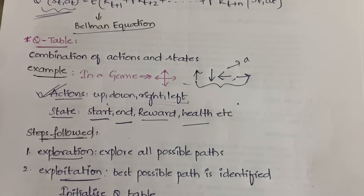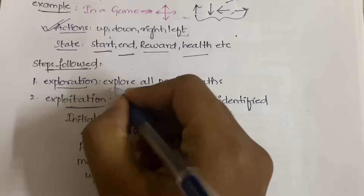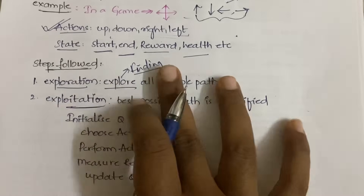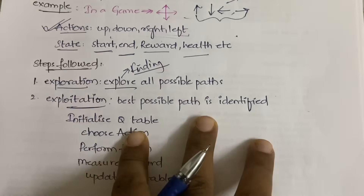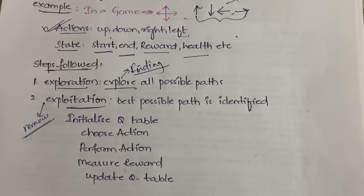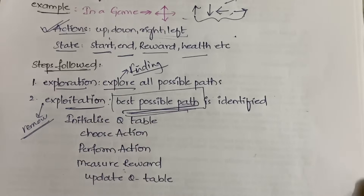Now let's understand how the Q-learning process works. The first step is exploration — you explore all possible paths. The second step is exploitation — you remove all unwanted, redundant, or irrelevant paths and select the best possible path from the remaining ones.